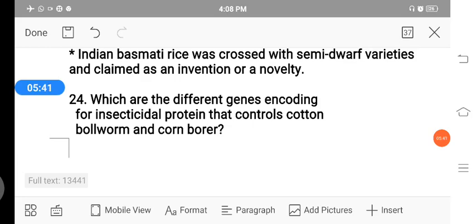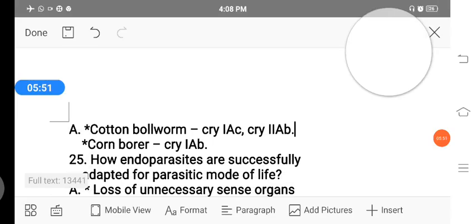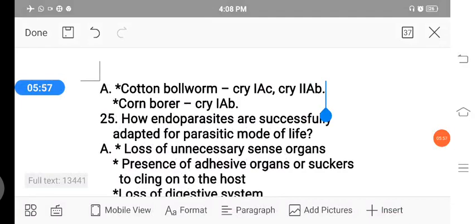Next, which are the different genes encoding for insecticidal protein that controls cotton bollworm and corn borer? The cotton bollworm genes are Cry1Ac, Cry2Ab, and corn borer genes are Cry1Ab.